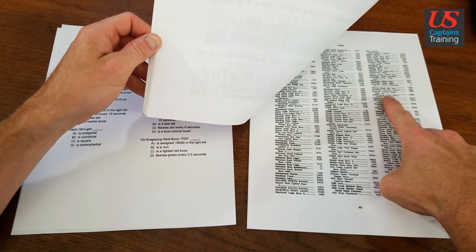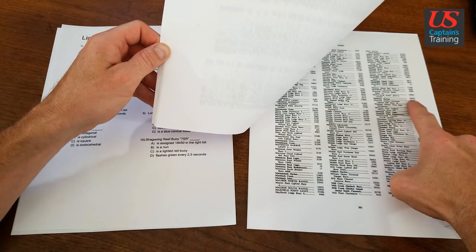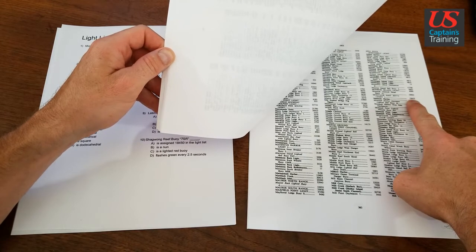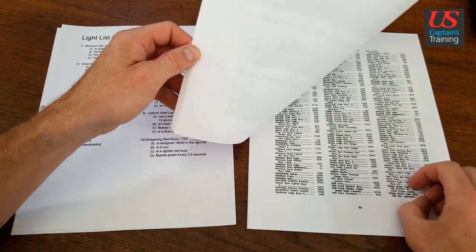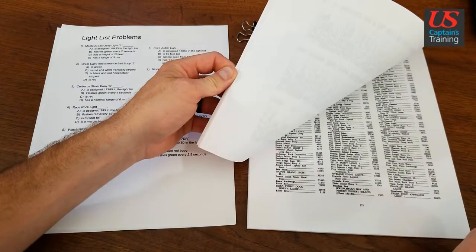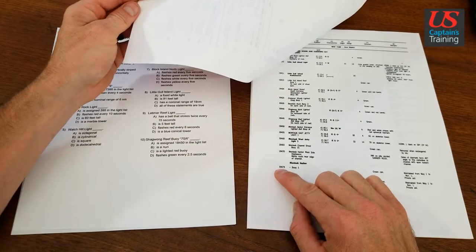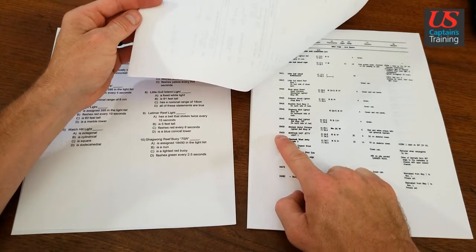Montauk East Jetty Light One - we get the number from column one: 18455. We go back in the light list and look up column one 18455. Here it is: 18455, Montauk East Jetty Light One.